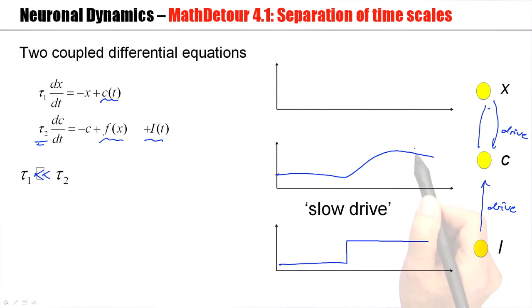Now, since it's slow, X of T can follow. X will approach its target value C of T rapidly. Rapidly because tau 1 is much smaller than tau 2. Therefore, X will be some copy of C of T. I admit that my hand-drawn copy is not very nice, but I hope you get the idea.